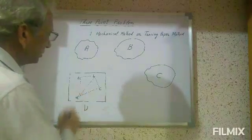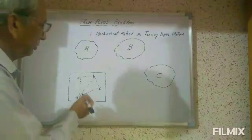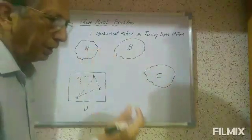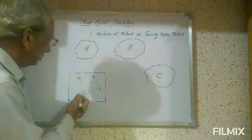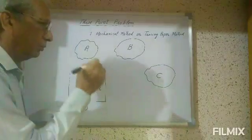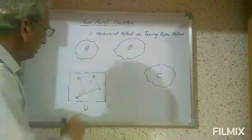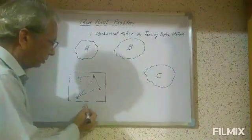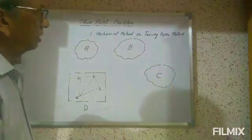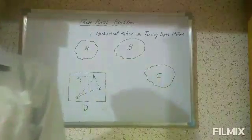If the three lines are not meeting at one point, there will be a small triangle, which is called the triangle of error. This means there may be a mistake on our part. In that case, we mark the point within the triangle — that point will be our D point. This is all for today. Next time we will discuss another method of the three-point problem. Thank you very much.